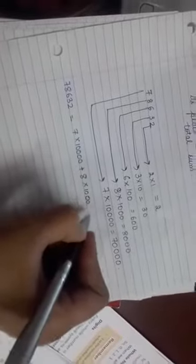It is written as 7 into 10,000 plus 8 into 1,000 plus 6 into 100 plus 3 into 10 plus 2 into 1. Or we can write like this: 70,000 plus 8,000 plus 600 plus 30 plus 2. So this is the expanded form.